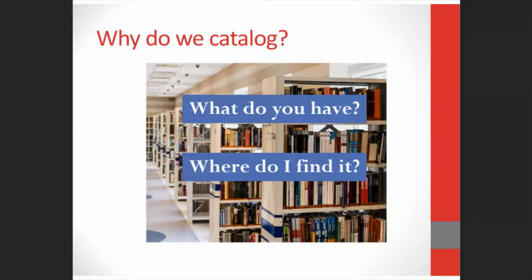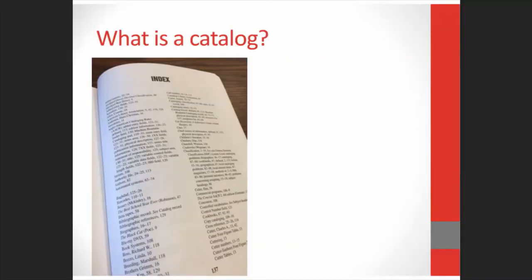Even small libraries have a large number of items, so you can't just throw everything on the shelves and hope that somebody's going to find what they want. Without the catalog, your patrons would be searching a strange and possibly unfamiliar place without a map. You can compare the catalog to the index of a book — you look in the index to find one specific thing so that you don't have to read the entire book.